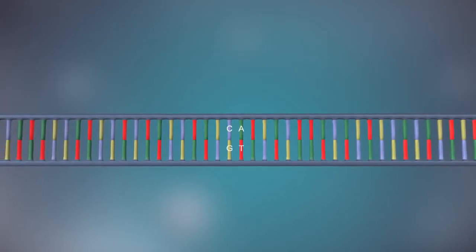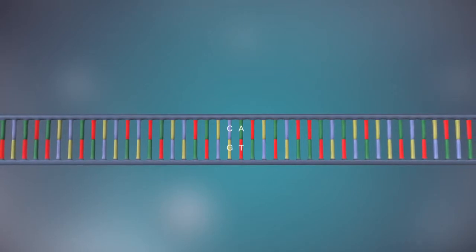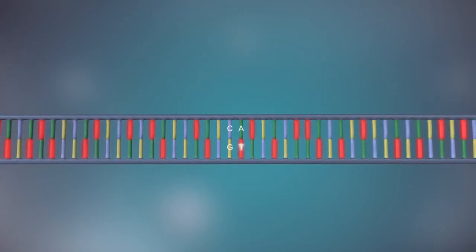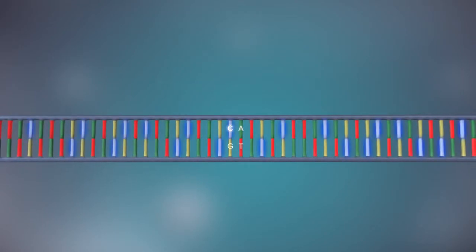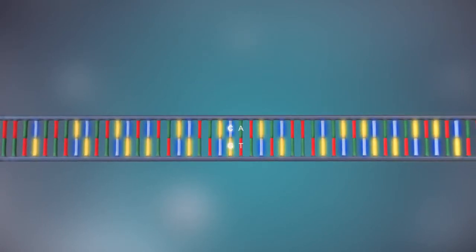The two strands are complementary. This means that wherever there's a T in one strand, there will be an A in the opposite strand, and wherever there's a C, there will be a G in the other strand.